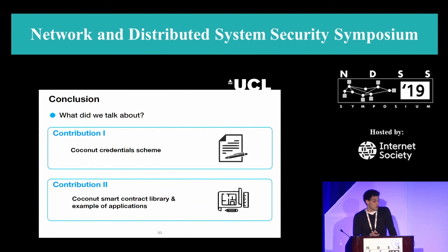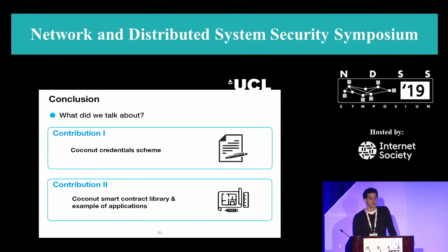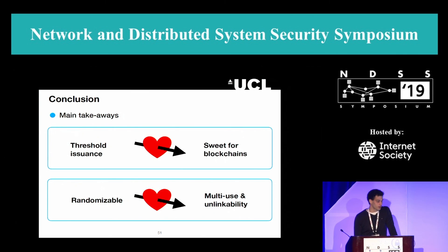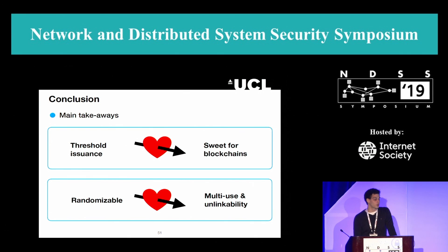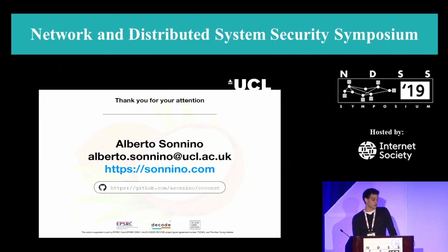In conclusion, the two contributions are the Coconut credential scheme — the cryptographic scheme and the smart contract library — along with example applications with benchmarks and implementation. The two key takeaways are: threshold issuance is what makes Coconut sweet for blockchains, and re-randomization makes it multi-use and unlinkable across multiple usages. Thank you for your attention.